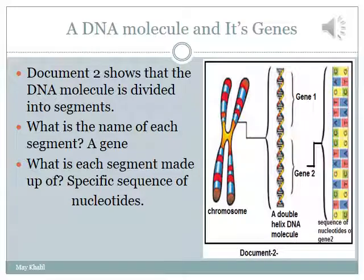The chromosome, which is located in the nucleus, is made up of a DNA molecule — a double helix DNA molecule. The DNA molecule is made up of a sequence of nucleotides. A DNA molecule is also segmented into parts or portions; each segment is called a gene. A DNA molecule may carry several genes and several sequences.